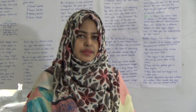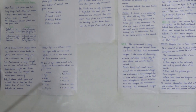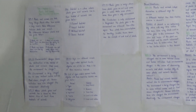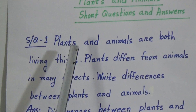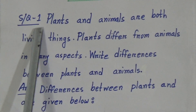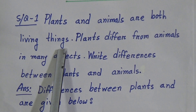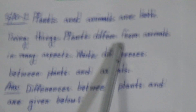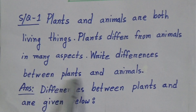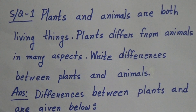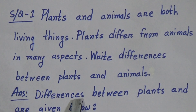Dear students, let's start today's class. You can see I have written all short questions and broad questions of this chapter here. Short question one: plants and animals are both living things. Plants differ from animals in many aspects. What are the differences between plants and animals?